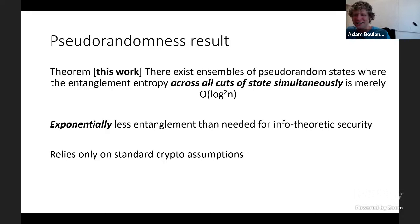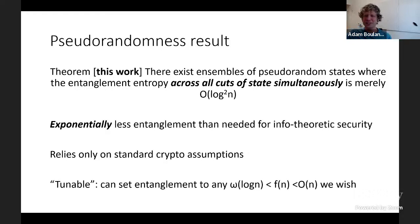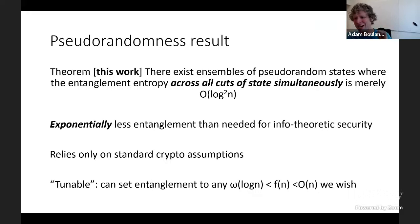More formally, we show there exist ensembles of pseudo-random states where, for any cut of the state, the entanglement entropy can be as low as merely polylogarithmic in N. So computationally pseudo-random states can have exponentially less entanglement than T-designs—something not possible in an information-theoretic setting. Our construction only relies on the existence of a one-way function secure against quantum attack, and we can make the entanglement tunable to any function strictly between log N and N.